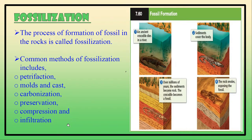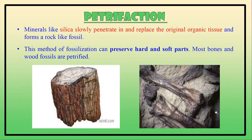These are the steps of fossil formation: first, an ancient crocodile dies in a river; sediment covers the body; over millions of years the sediment becomes rock and the crocodile becomes a fossil; the rock erodes, exposing the fossil. Petrifaction: minerals like silica slowly penetrate inside and replace the original organic tissue, forming a rock-like fossil. This method can preserve both hard and soft parts such as bones and wood.